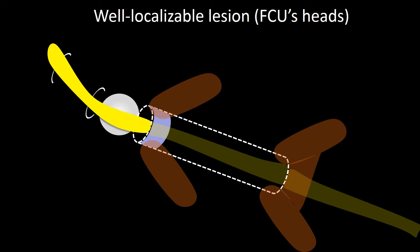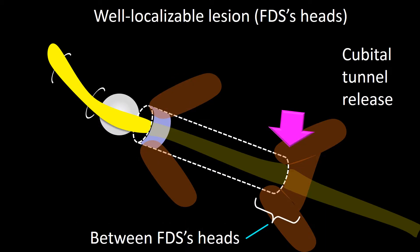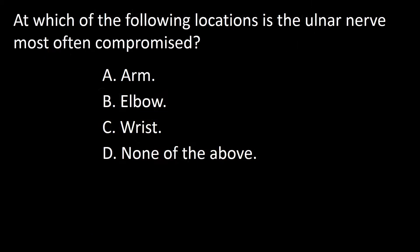Well-localizable lesions to the area of the heads of the flexor carpi ulnaris or between the heads of the flexor digitorum superficialis are amenable to cubital tunnel release, which is a much less invasive procedure. So the answer to this question is B.